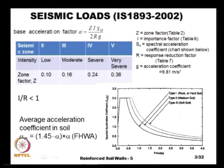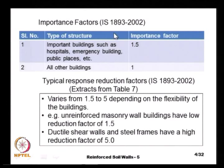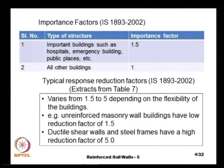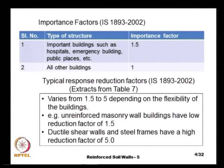The importance factor is given in IS 1893 with respect to structural applications. Depending on the type of structure — whether it is an important building, a public facility like a hospital, emergency building, or school — these structures will have an importance factor of 1.5, and all other buildings will have an importance factor of 1. We can extrapolate this to soil structures: if our retaining wall is part of a very important national highway, we assign an importance factor of 1.5, whereas for rural roads or unimportant structures, we give an importance factor of 1.